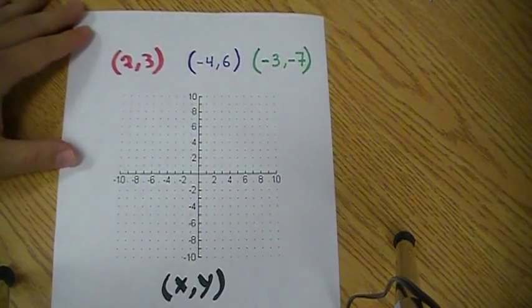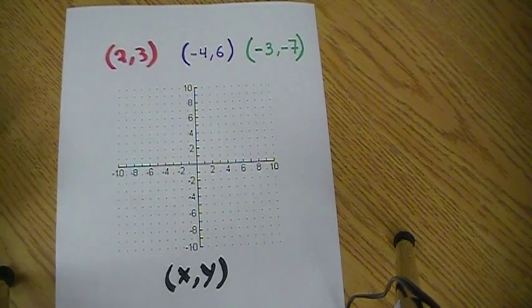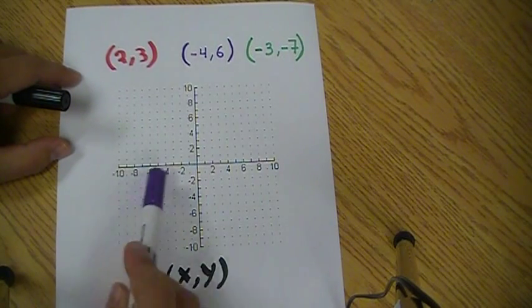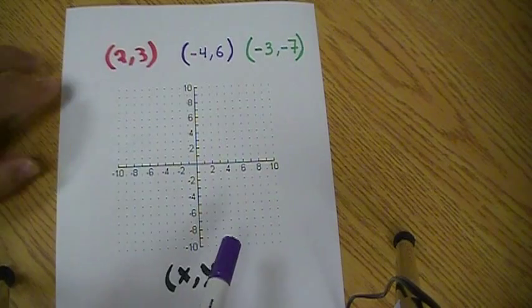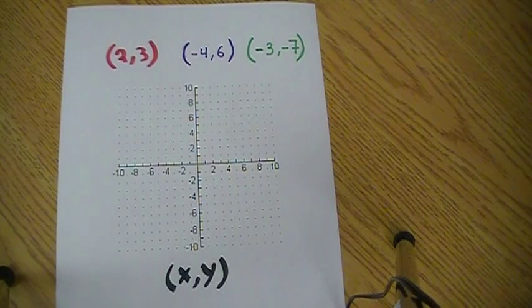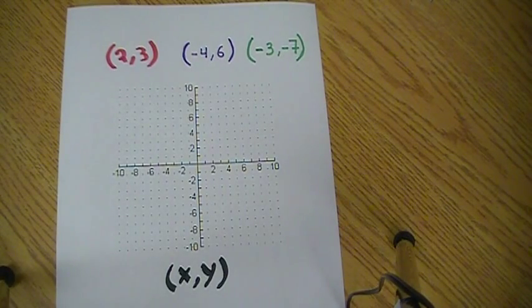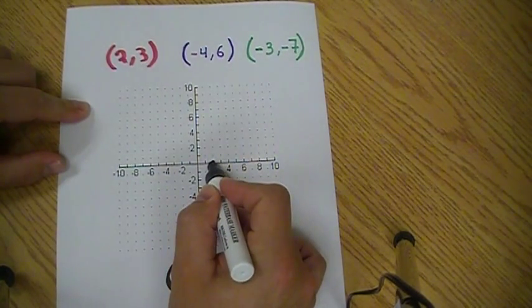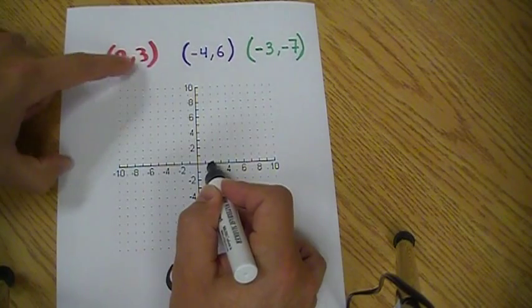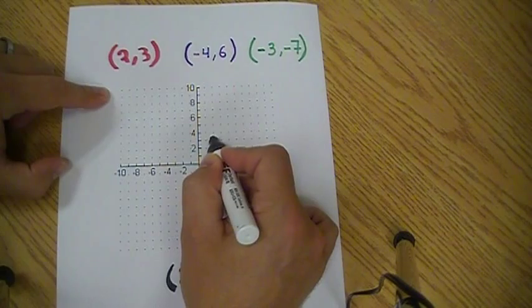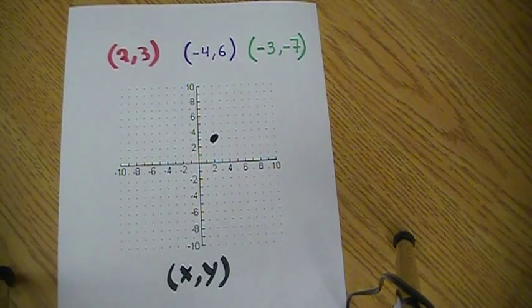How do you place points on the Cartesian plane? Well, it's ordered by x and y. The x is the horizontal axis, the y is the vertical axis. So if I want to place two and three, two would be going on the x-axis and three is going up three. There's my point two and three.